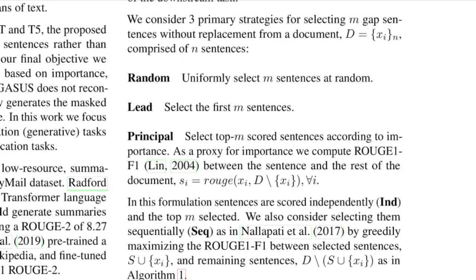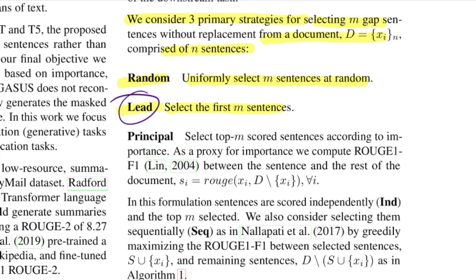The authors explored three primary strategies for selecting M gap sentences from a document D with N sentences. The first is random: randomly select any M sentences and mask them. The second is lead: select the first M sentences — which is a strong baseline for news corpora since leading sentences often serve as a good summary. The third is principal: select the top M scored sentences according to an importance metric, which is the Rouge-1 F1 score calculated between each sentence and the rest of the document.